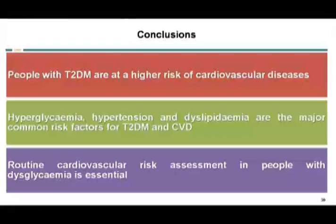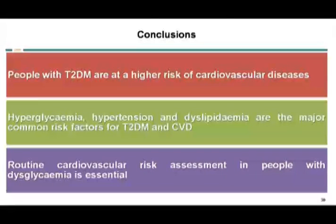In conclusion, people with type 2 diabetes are at higher risk of cardiovascular disease. Hyperglycemia, hypertension, and dyslipidemia are the major common risk factors for type 2 diabetes and cardiovascular disease. We should try our best to find out the risks involving these factors and treat them. Routine cardiovascular risk assessment in people with dysglycemia is essential.